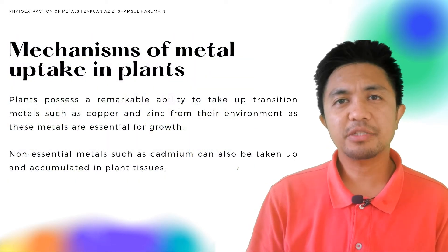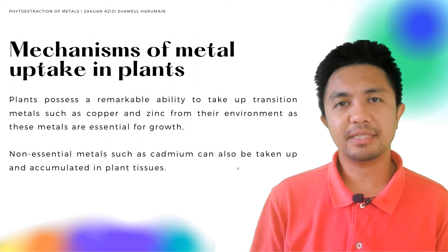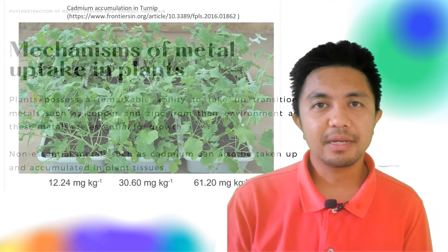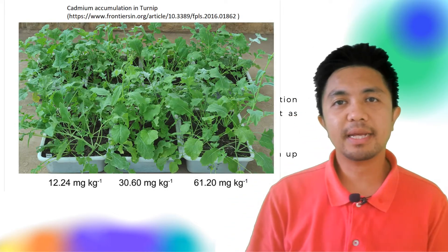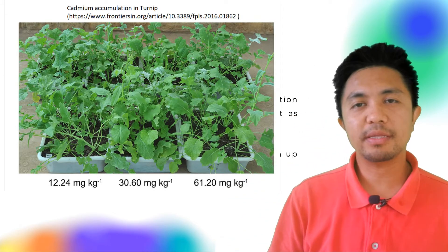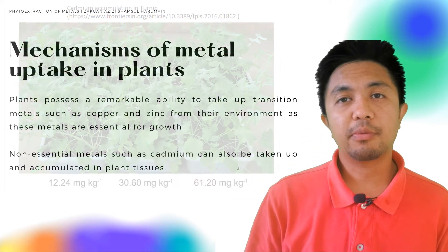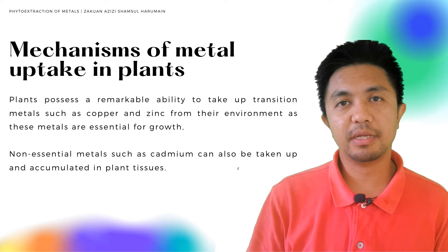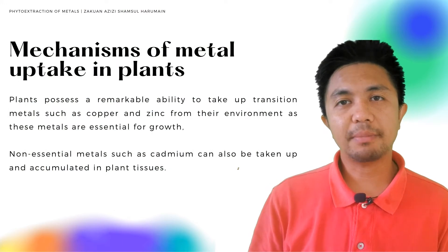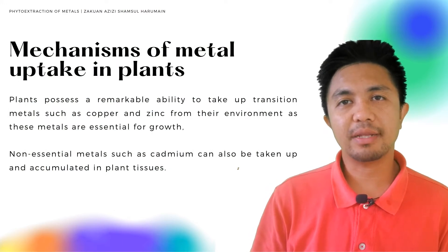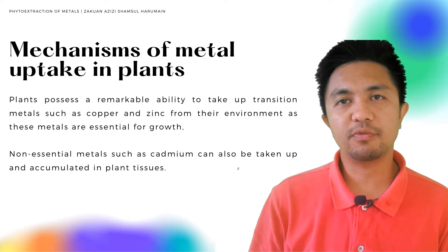Interestingly, non-essential metals such as cadmium can also be taken up and accumulated in plant tissues. Prior to the uptake, while some metals are readily soluble for uptake,